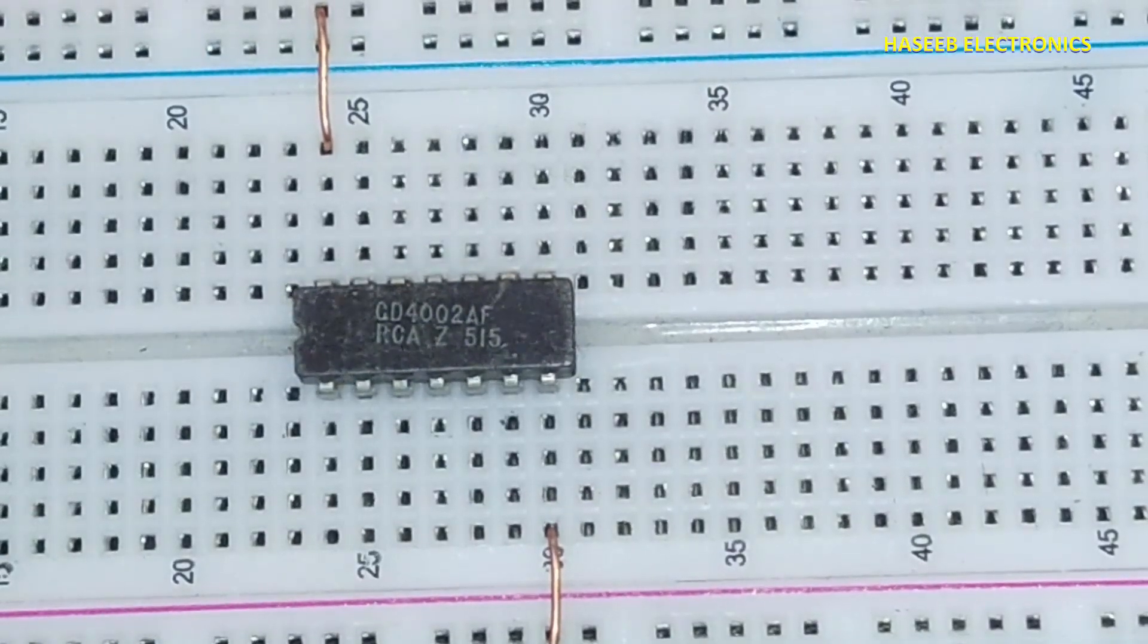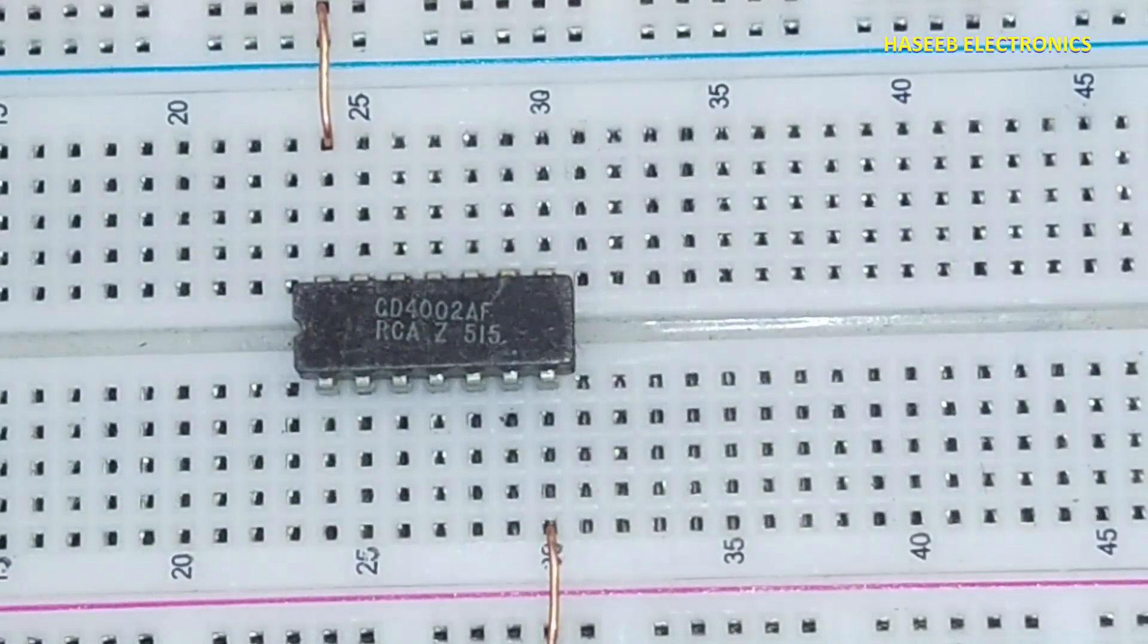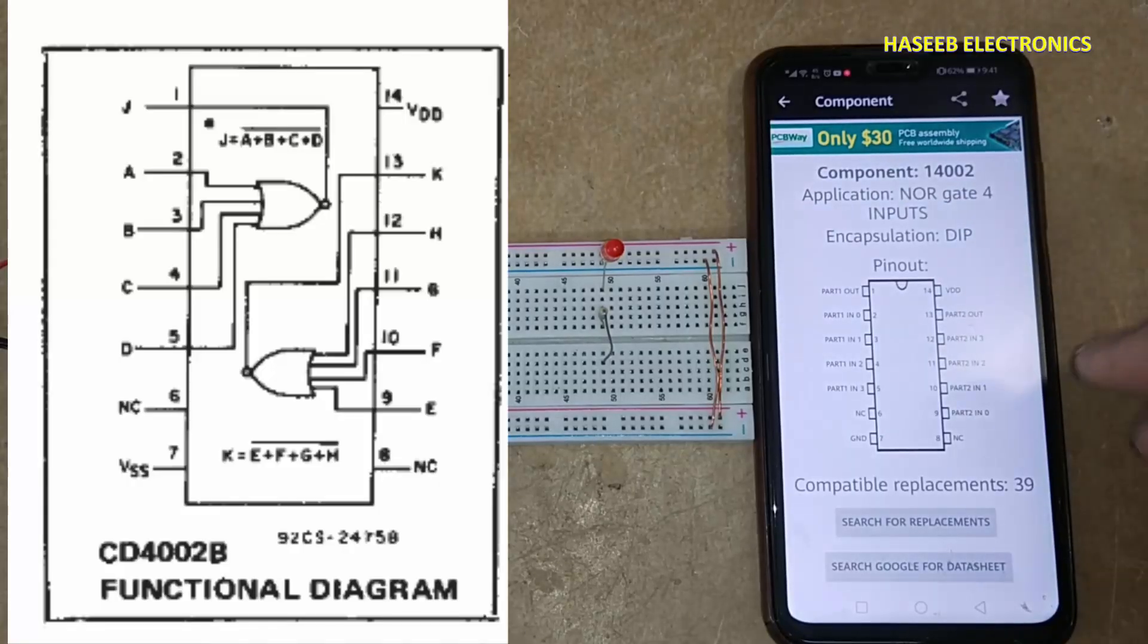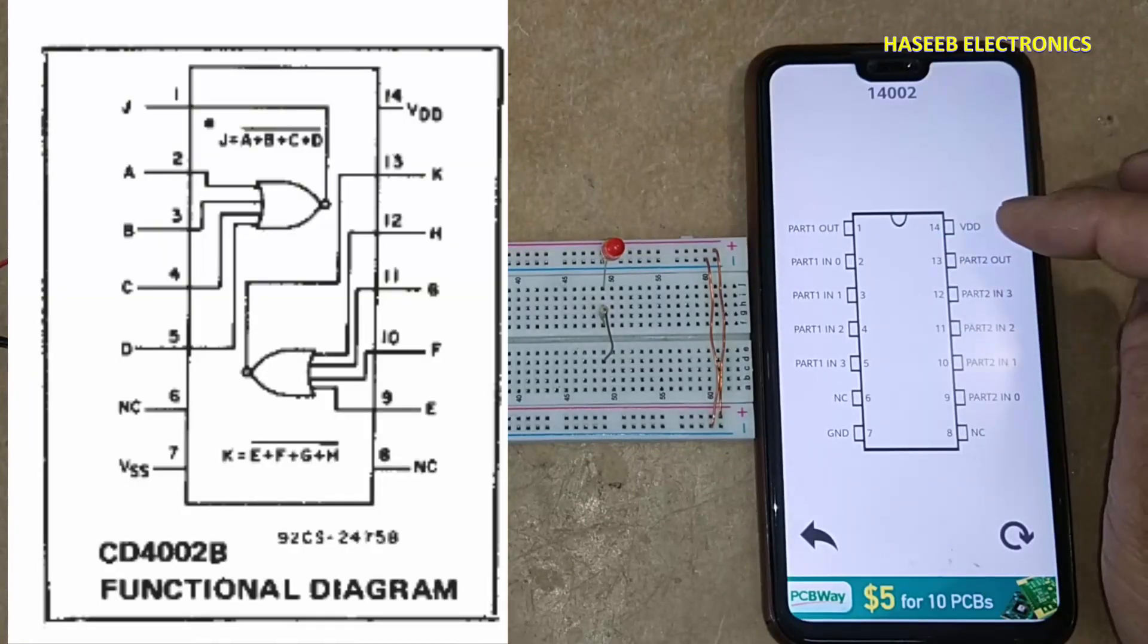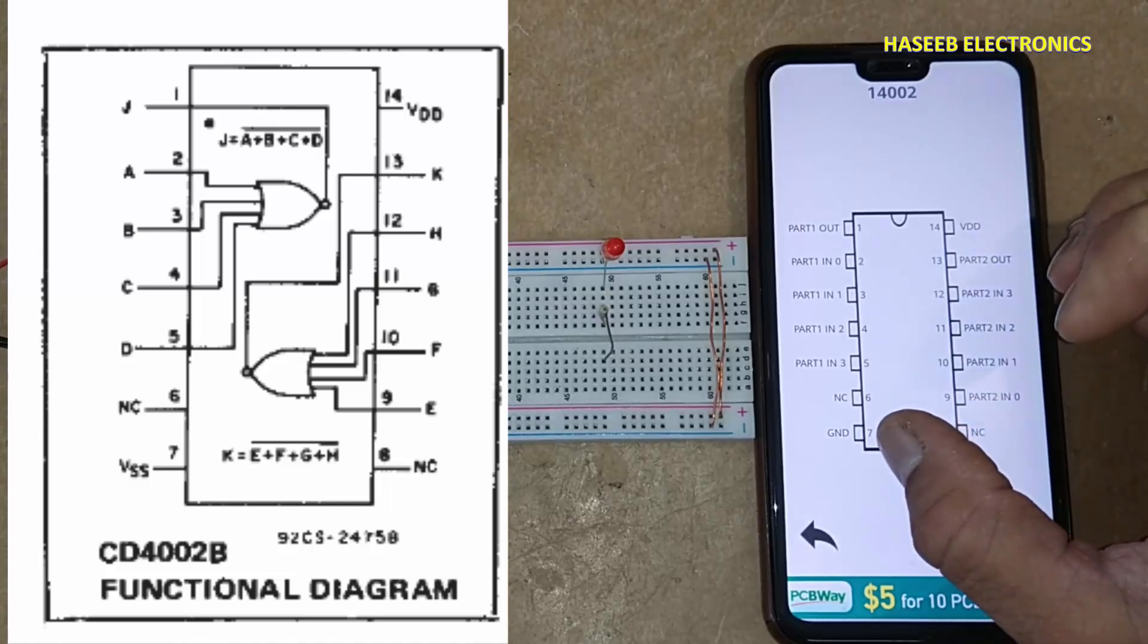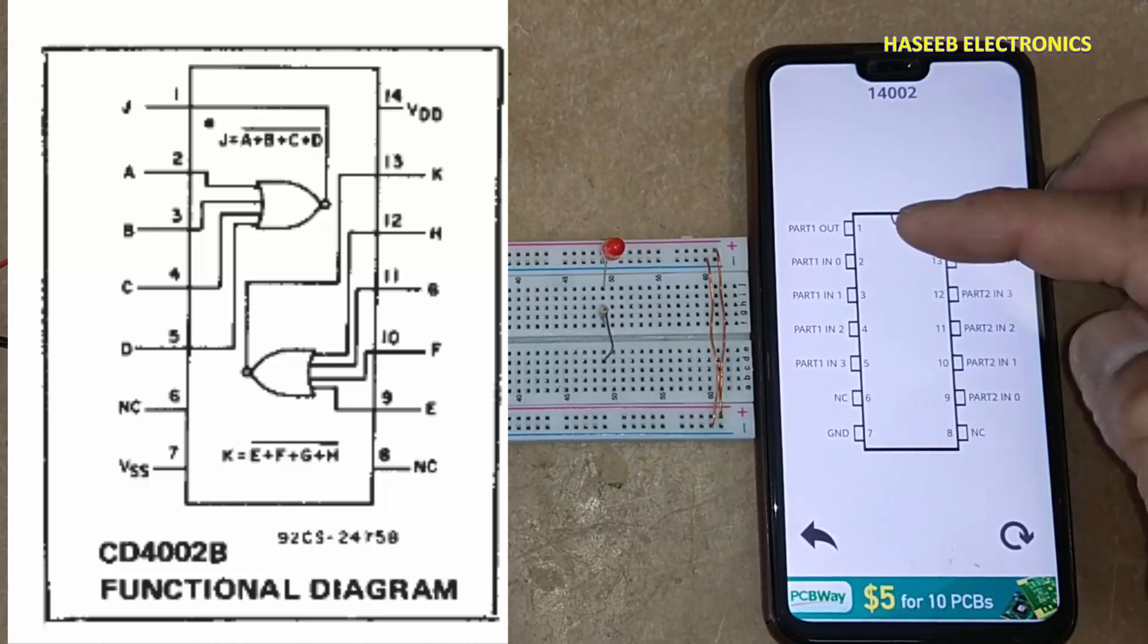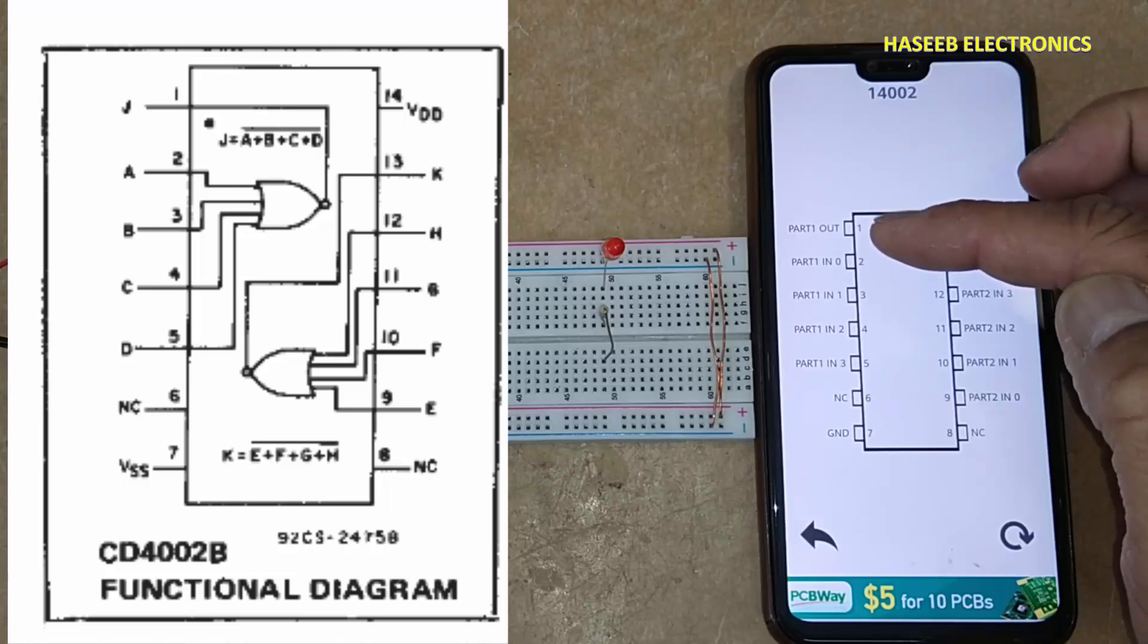Assalamu alaikum. Friends, welcome back to my channel. The CD4002 is a four-input NOR gate CMOS IC. Pin 14 is VDD, 3 to 15 volts. Pin 7 is ground. Pins 6 and 8 are not connected. There are two NOR gates in one IC.